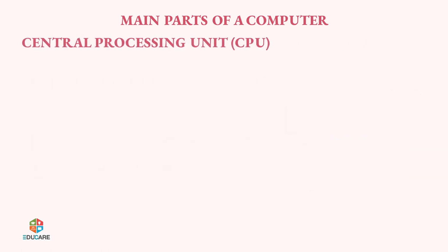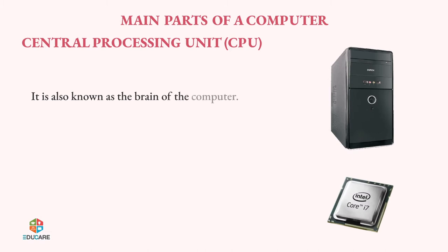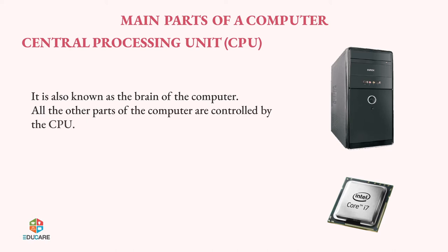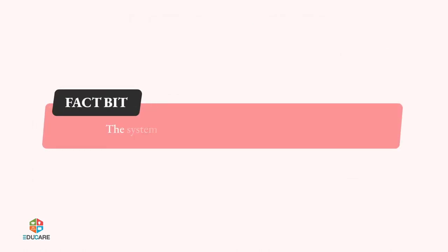Central Processing Unit (CPU). It is also known as the Brain of the Computer. All the other parts of the computer are controlled by the CPU. CPU helps the computer in remembering things. It helps the computer in thinking and doing all its work. Factbit: The system unit holds the central processing unit.